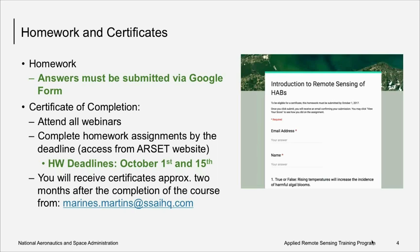We will have two homework assignments. You've already been given one after week two, and there will be another one after week four. These will be submitted through Google Forms, due October 1st for the first and October 15th for the second. To receive a certificate of completion, you must attend all four live webinars and complete both homework assignments by the due date. It does take some time to process these certificates, so expect to receive them about two months after course completion.